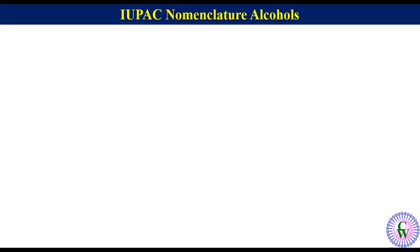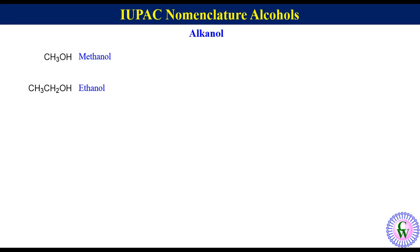Now let's go through examples. We will start with very simple alcohols containing one and two carbon atoms. These are simply named as alkan-ol. So the IUPAC name of the one-carbon alcohol is methanol, and that of the two-carbon alcohol is ethanol.